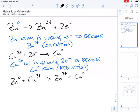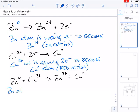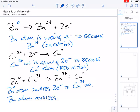In this reaction, what we would want to take away as a combination of what we wrote in blue is that the zinc atom is donating two electrons to the copper 2+ ion.